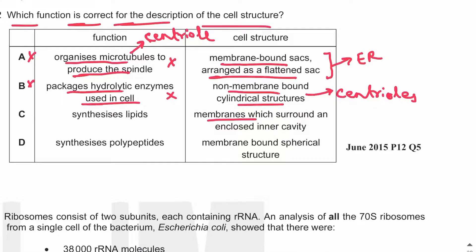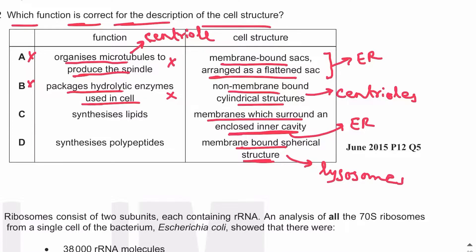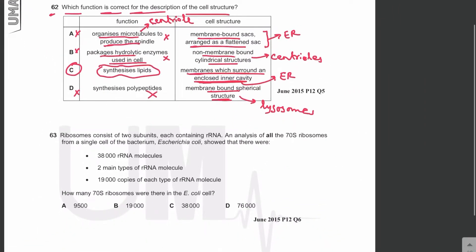Membranes which surround an enclosed cavity — this could be ER, and it can synthesize lipids. Membrane-bound spherical structures are lysosomes, and lysosomes do not synthesize polypeptides, so D is wrong. The answer is C: membranes surrounding an enclosed inner cavity, most likely endoplasmic reticulum, and smooth ER can synthesize lipids.